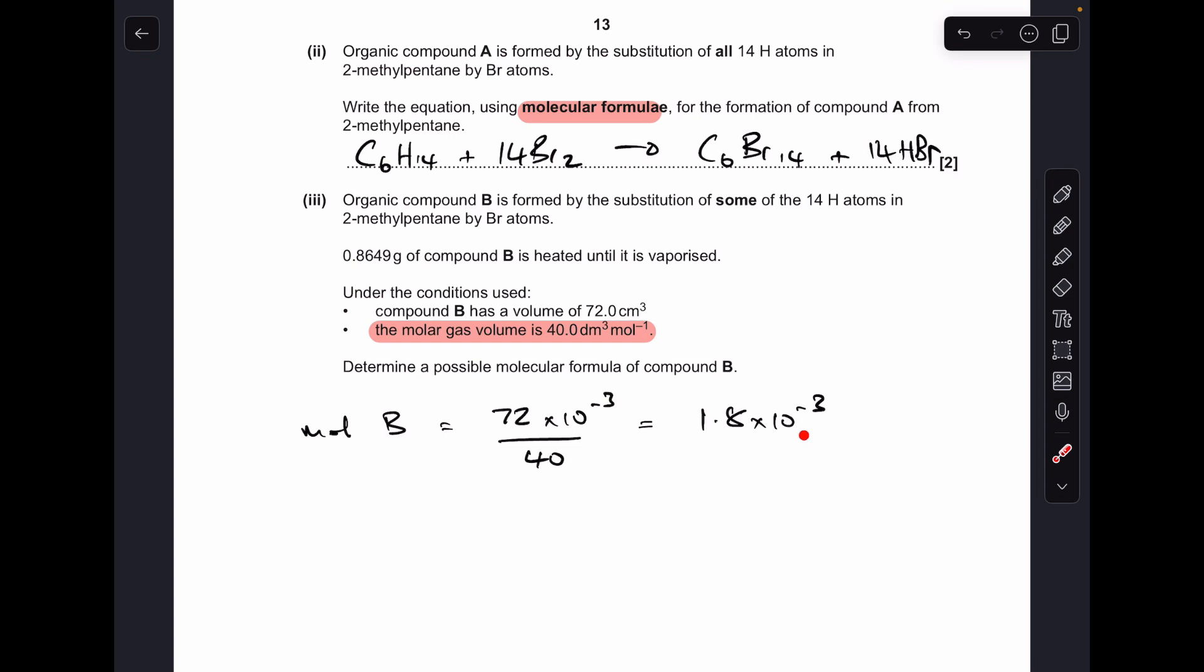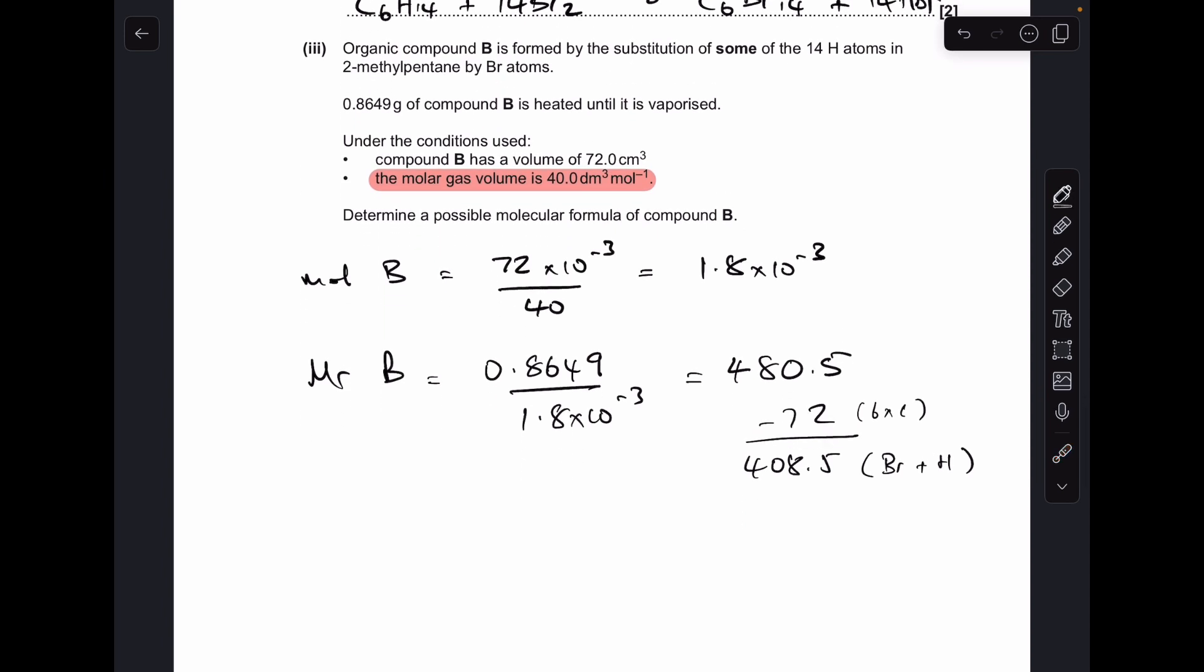So the MR of B is the mass over those moles, so it's 480.5. We're going to subtract 72 from that because of the 6 carbons it's got, which leaves us with 408.5 for the bromines and hydrogens. So the next thing we need to do is divide by the MR of 1 bromine, 79.9, so we get just over 5, so therefore it must be C6Br5, remember there's a total of 14 things, atoms added to the 6 carbons, so it must be H9.